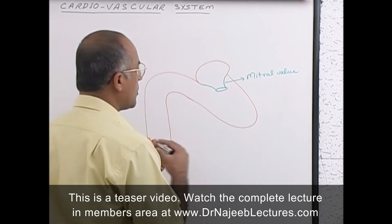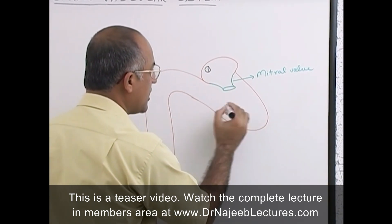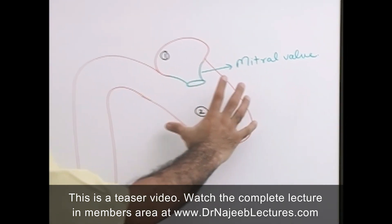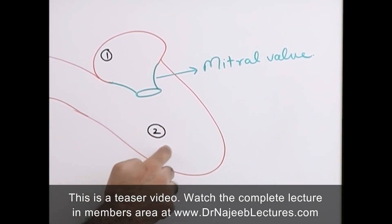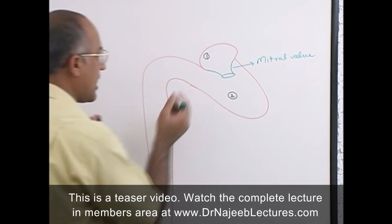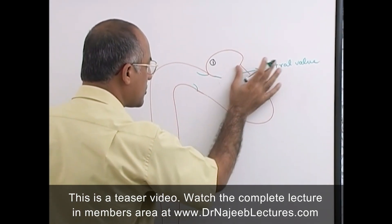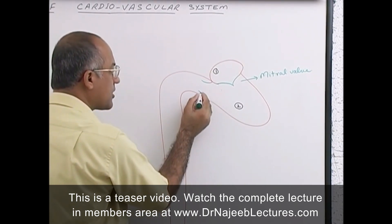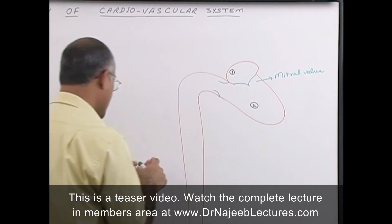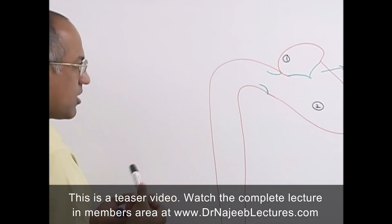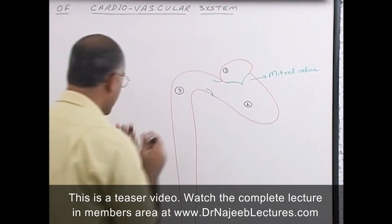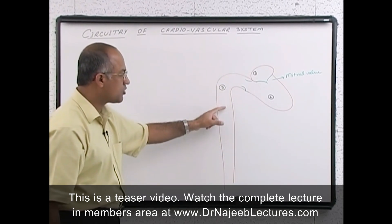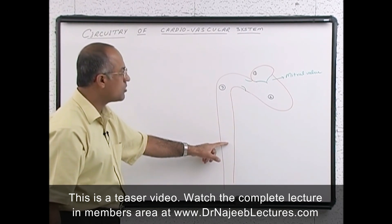Once blood moves from the left atrium into the left ventricle, the left ventricle contracts and the mitral valve closes. The left ventricle keeps contracting until pressure becomes very high and opens the aortic valve. Blood from the left ventricle then shifts to the aorta, the main outflow vessel, which supplies blood to the systemic circulation — most of the tissues in the body.